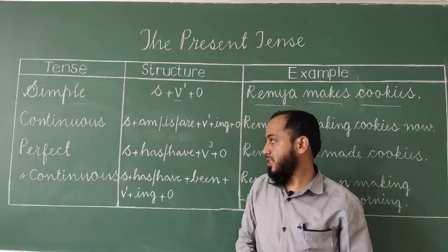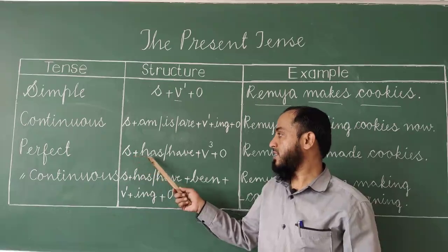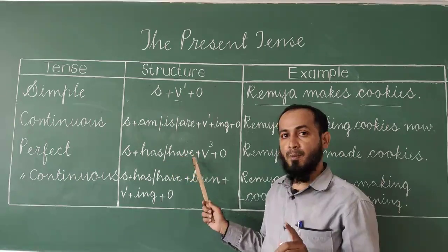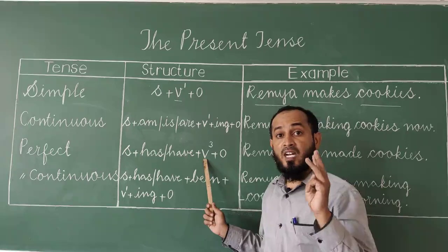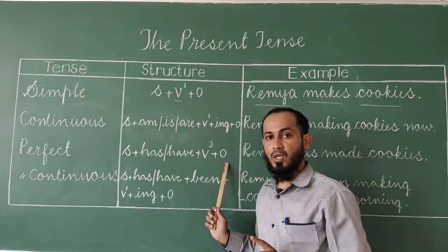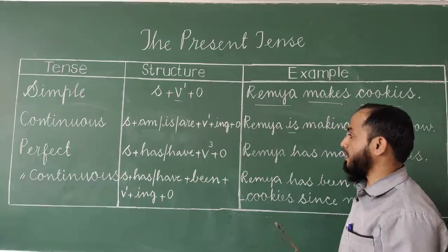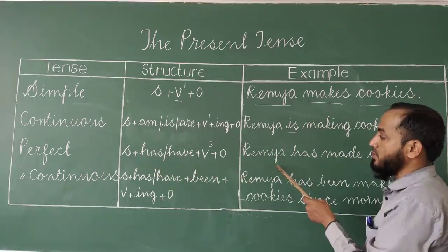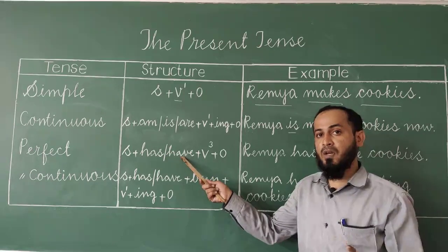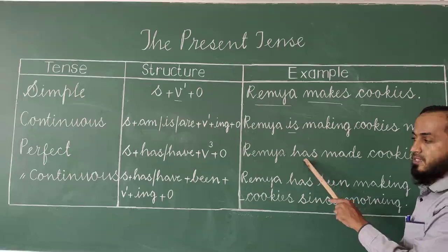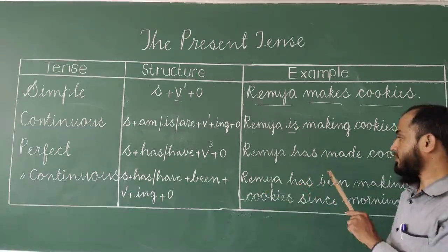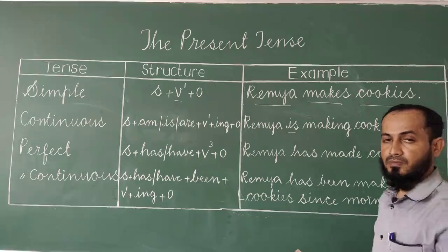For perfect tense, the structure is: subject plus has or have plus V3 (past participle) plus object. For example, 'Remia has made cookies.' Remia is the subject, has is chosen as appropriate, made is V3 (make, made, made), and cookies is the object.